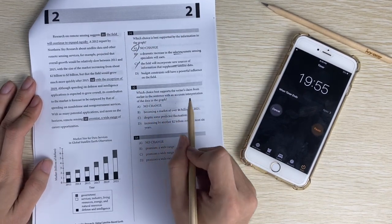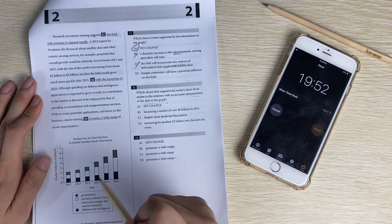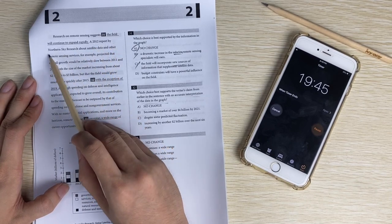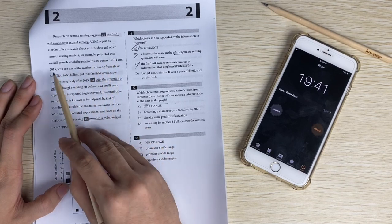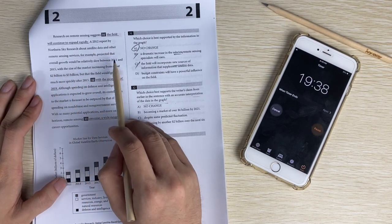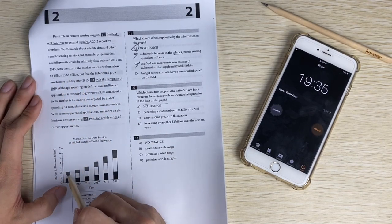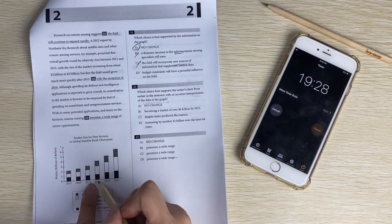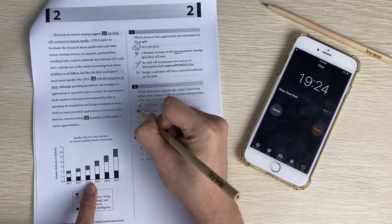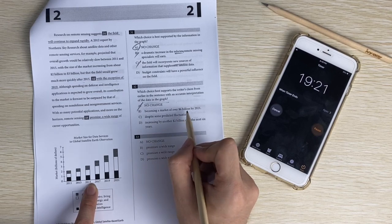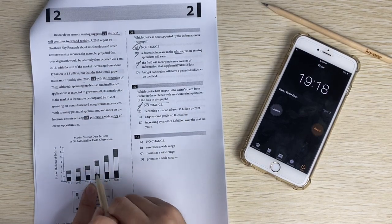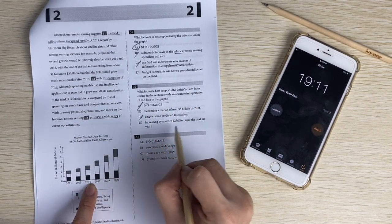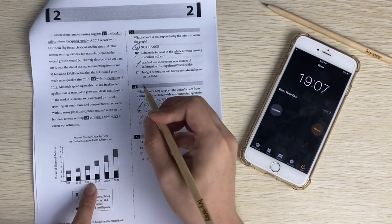Supports a writer's claim from earlier sentence. Interpretation of the graph, so it's about a graph again. Earlier in the sentence, where is it? Here. A report by them projected that growth will be eleven to fifteen. So this will be two to three billion. But that field will grow much quickly from 2015. With the exception of 2019 is wrong because it's still growing. Becoming market of over six billion in 2021 - that might be it. It looks very close. Despite some predictive fluctuation - no fluctuation. Increasing by another two billion is not enough. So the answer is B.